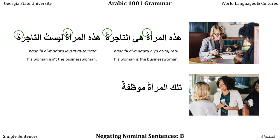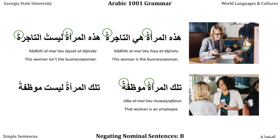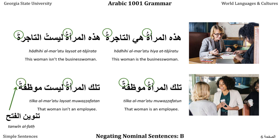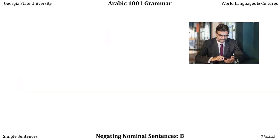Looking at another woman: 'Tilka al-Mar'atu Muwadzafatun' — that woman is an employee. Both halves are in the Marfu case by default; al-Mar'atu gets a single Dhammah as definite, Muwadzafatun gets Tanwina al-Dhamm as indefinite. If we make her not something: 'Tilka al-Mar'atu Leysat Muwadzafatan' — that woman isn't an employee — where Tilka al-Mar'atu stays in the Marfu case, but Muwadzafah takes Tanwina al-Fatah because it is Mansoub and indefinite. This difference — Muwadzafatun vs. Muwadzafatan — is trivial for basic communication but becomes more important later, especially because there is a spelling difference.